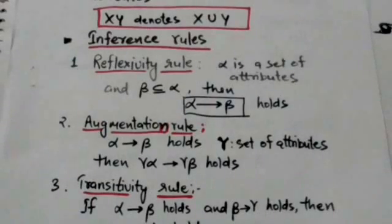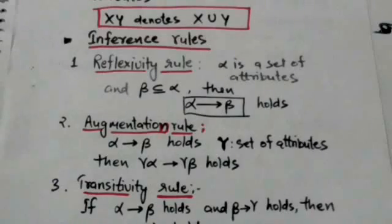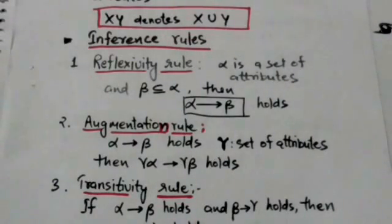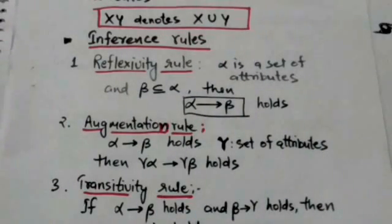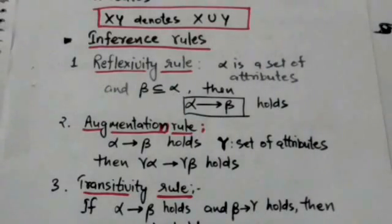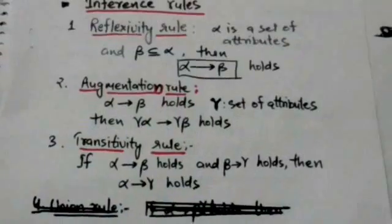The first inference rule is the reflexivity rule. It states that if alpha is a set of attributes and beta is a subset of alpha, then the functional dependency from alpha to beta holds.